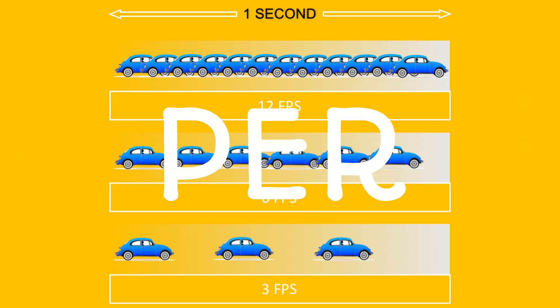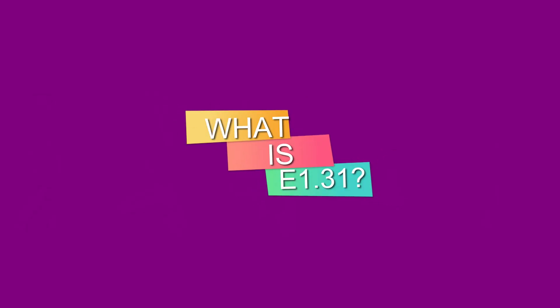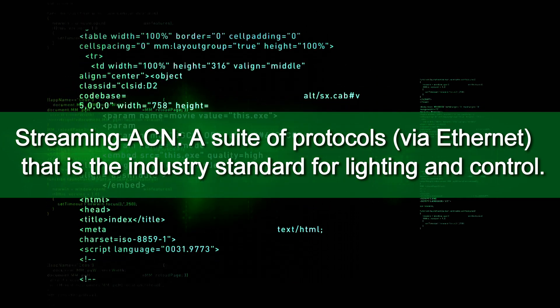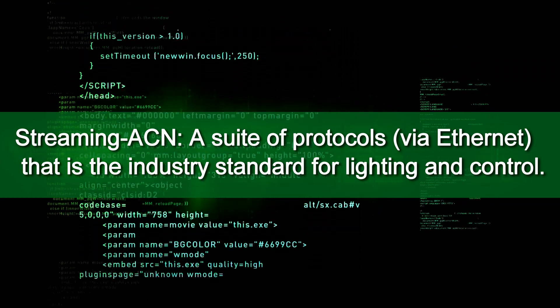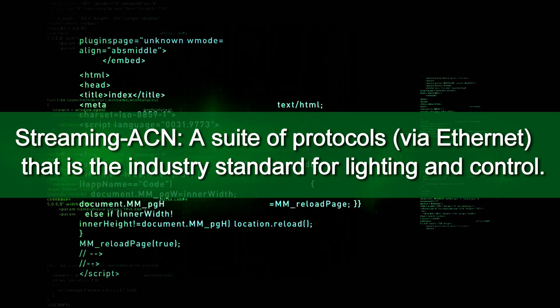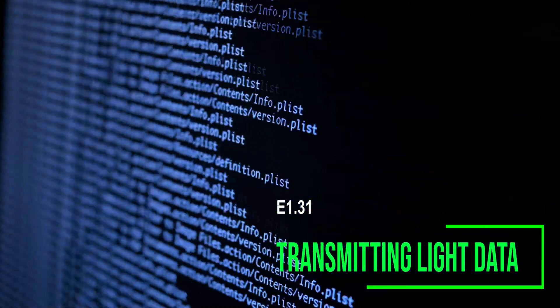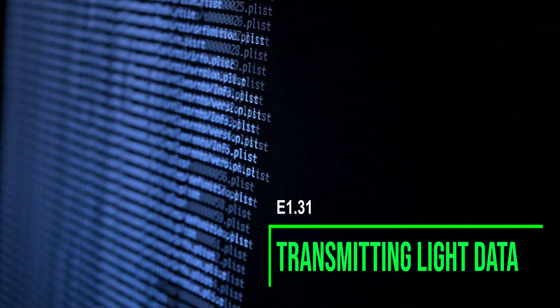Frames per second, or FPS, is used as a measure of frame rate — the number of consecutive full-screen images that are displayed each second. E1.31, also called streaming ACN, is a protocol for sending DMX 512 data over the network. It is expected to become the new standard for transporting DMX over an IP address, replacing protocols such as Art-Net and sACN. The simplest way to think about E1.31 is that it is a way to transport a large number of lighting control channels over a traditional Ethernet network connection.